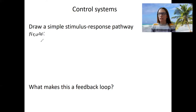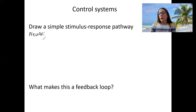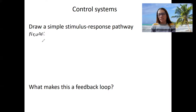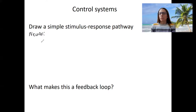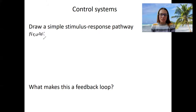A stimulus response pathway in the nervous system: the knee-jerk reflex is initiated by the spinal cord, which is the integrating center for that. That is a nervous system response, not an endocrine system response — and that's because it's quick.